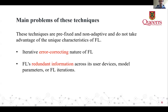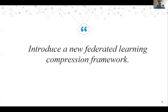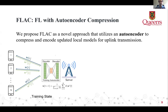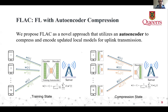Our goal was to introduce a new federated learning compression framework that utilizes redundant information across an FL system and compresses updated models dynamically for uplink transmission. We propose FLAG — Federated Learning with Auto-Encoder Compression — which uses an auto-encoder to compress and encode updated local models. During the training state, FLAG trains the auto-encoder at the server using updated local models. In the compression state, FLAG sends the encoder to user devices to compress local models, while the server uses the decoder to reconstruct compressed updates and calculate the global model.